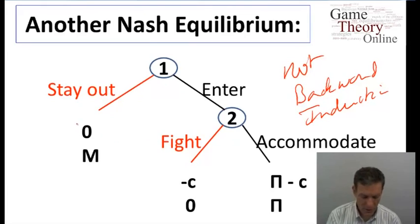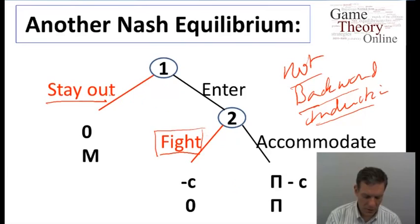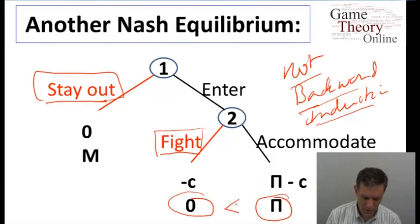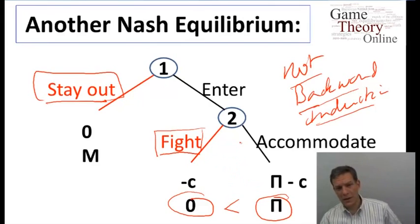In particular here, the one we solved for before, where firm 1 stays out anticipating that firm 2 would fight if they entered, this is not found by backward induction. This is a Nash equilibrium, but it's a Nash equilibrium only because firm 1 believes that firm 2 is going to do something which is not in firm 2's interest. So firm 2 is not maximizing their payoff at the second node.